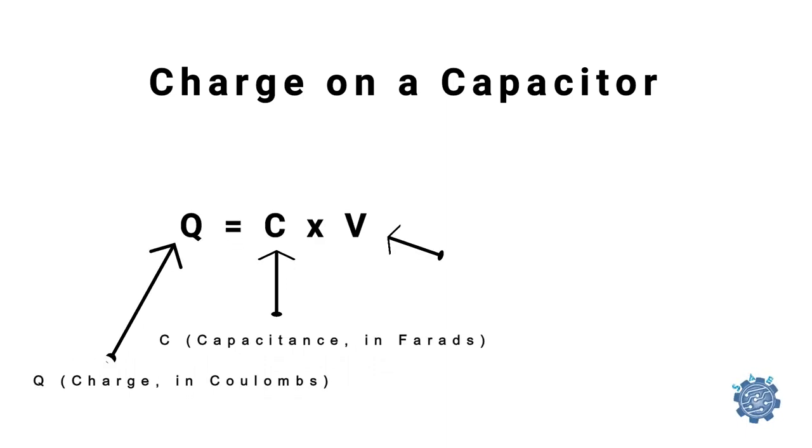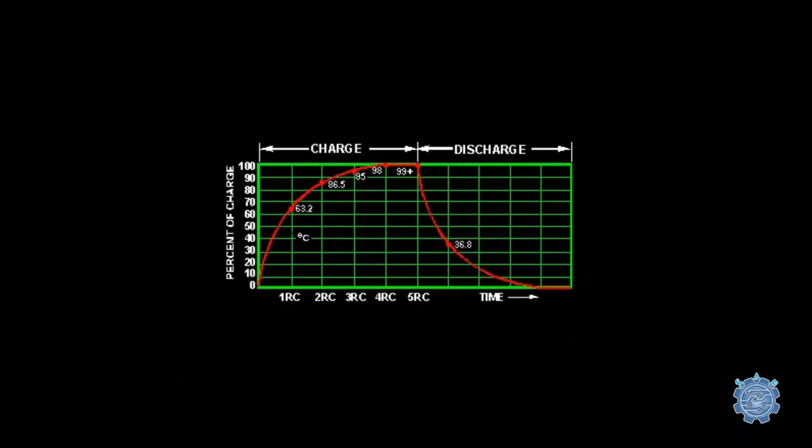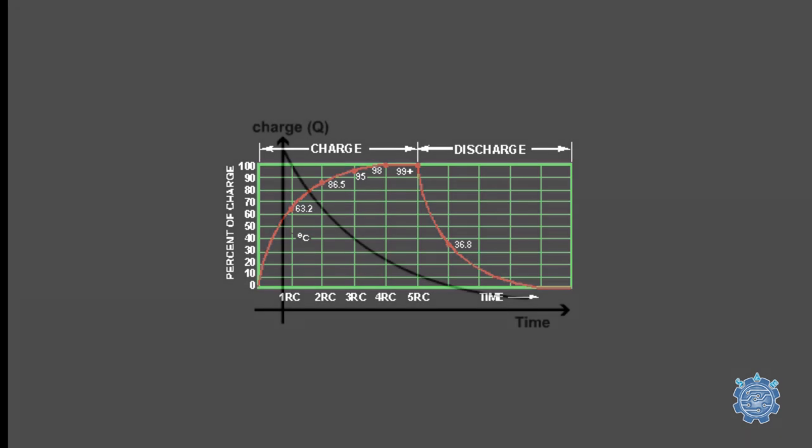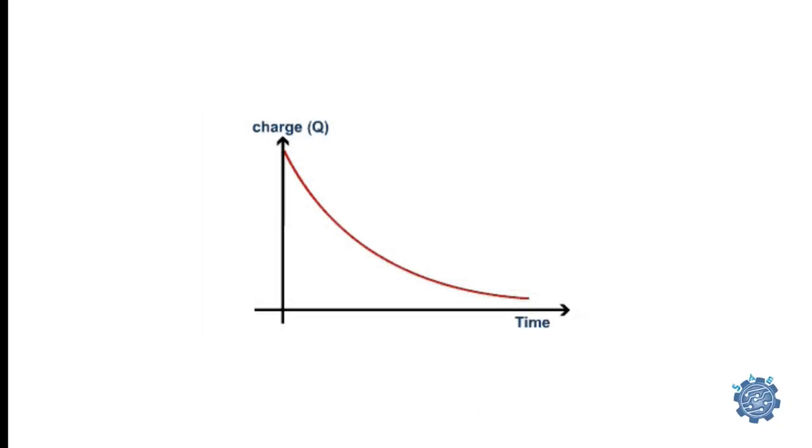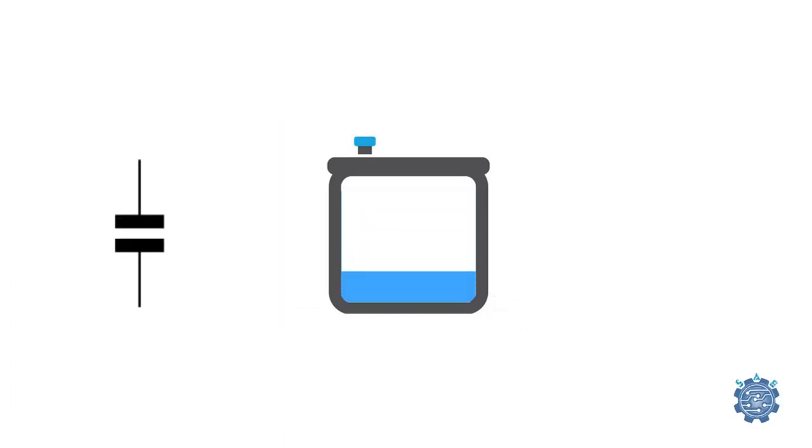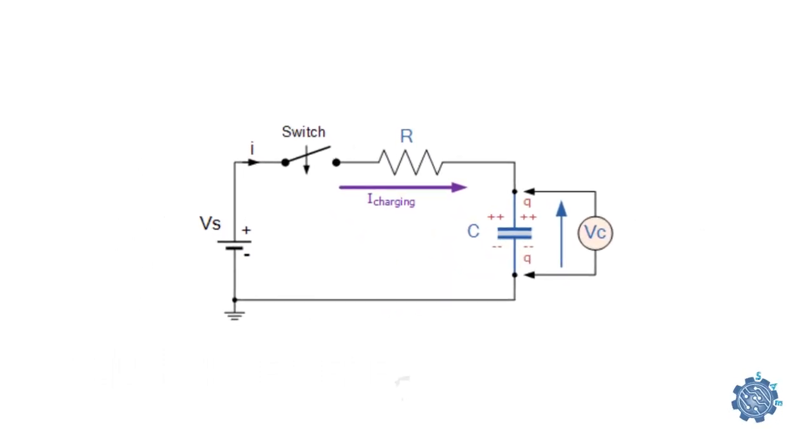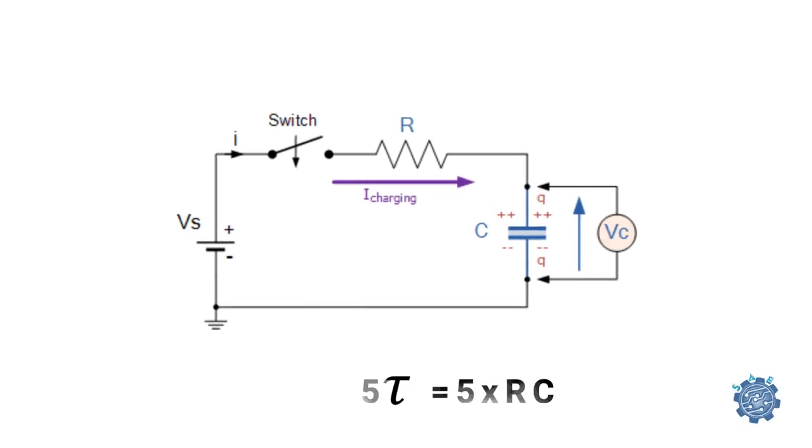The electrical charge stored on the plates of the capacitor is equal to capacitance multiplied with voltage. Charging or storage and discharging or release of a capacitor's energy is never instant, but takes a certain amount of time to occur, with the time taken for the capacitor to charge or discharge, to within a certain percentage of its maximum supply voltage, being known as its time constant. The time required for the capacitor to be fully charged is equivalent to about 5 time constants, where tau is equal with resistance multiplied with capacitance. This forms the basics of an RC charging circuit, where 5 tau can also be thought of as 5RC.